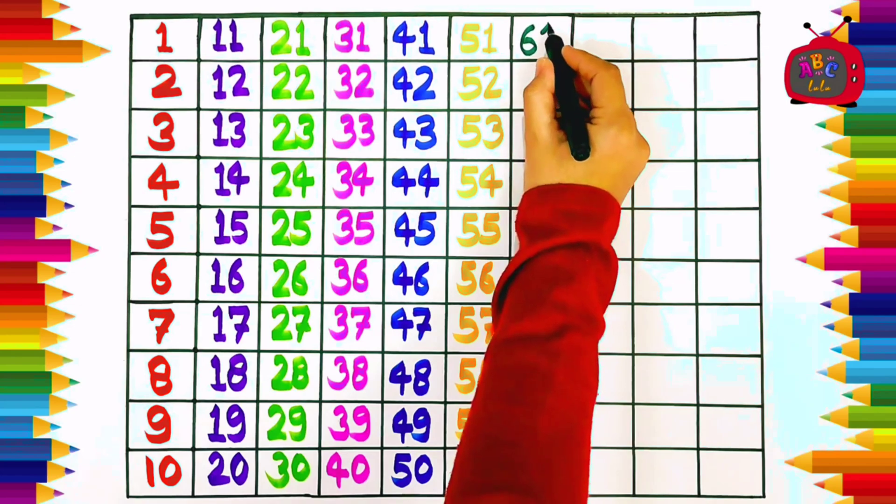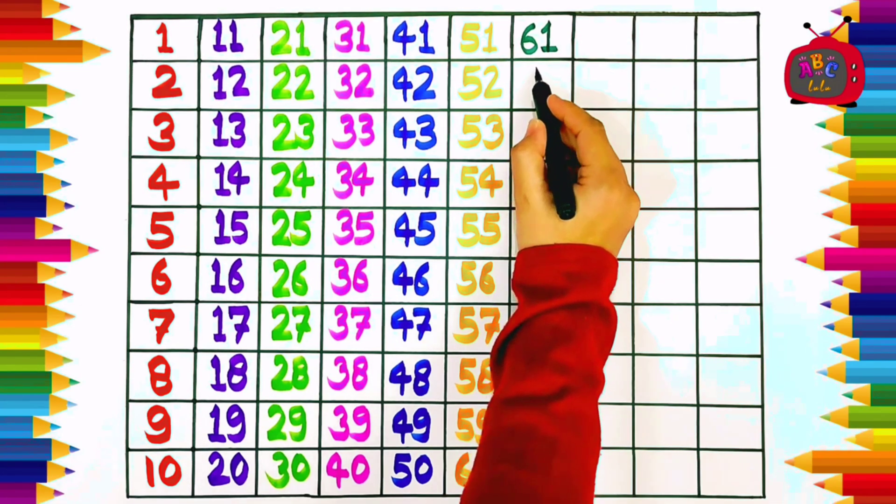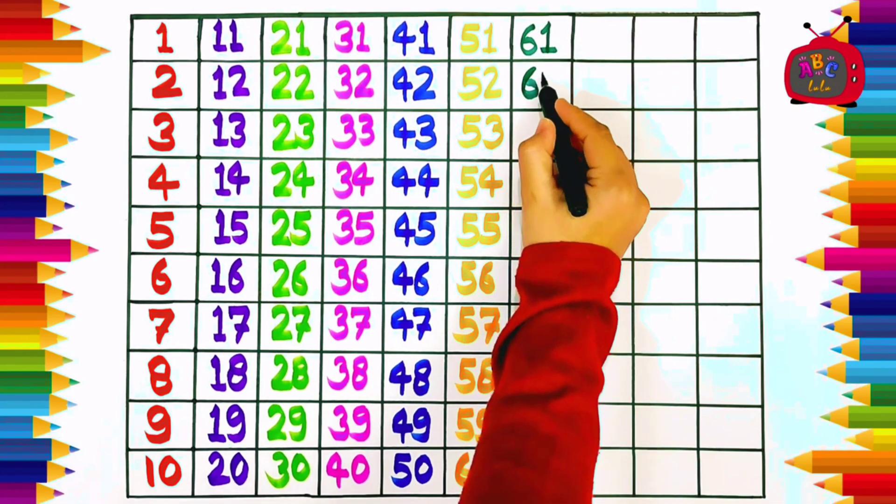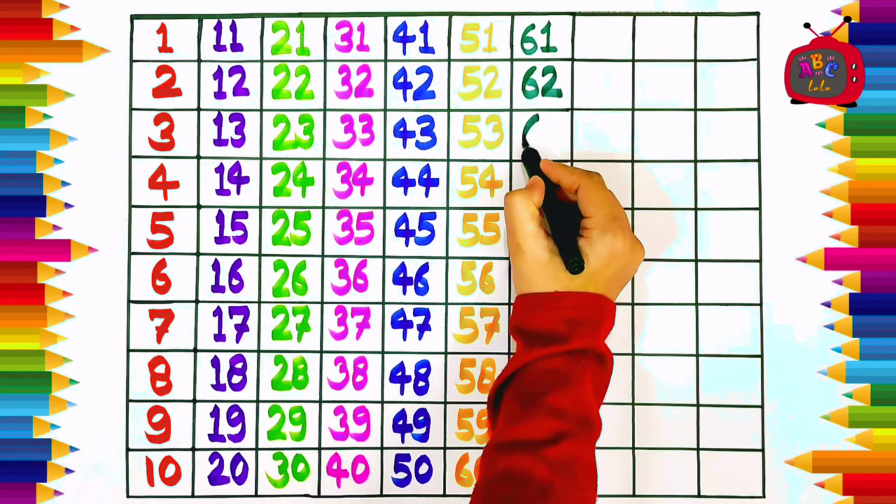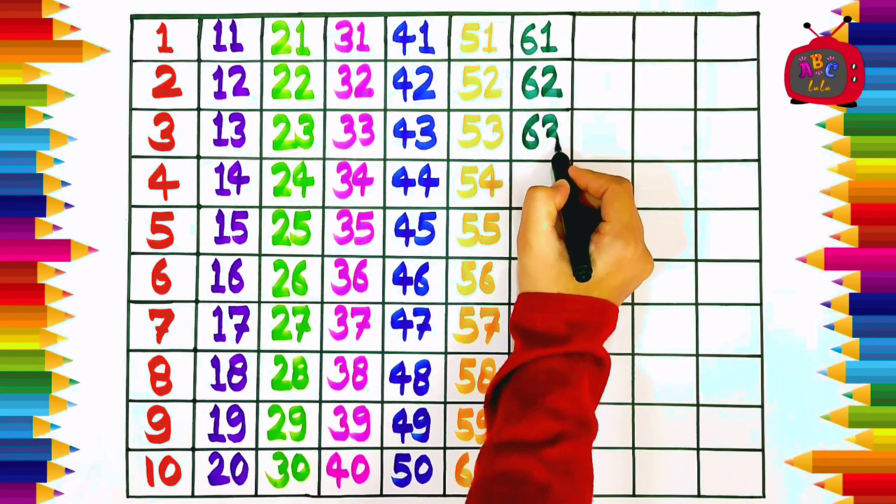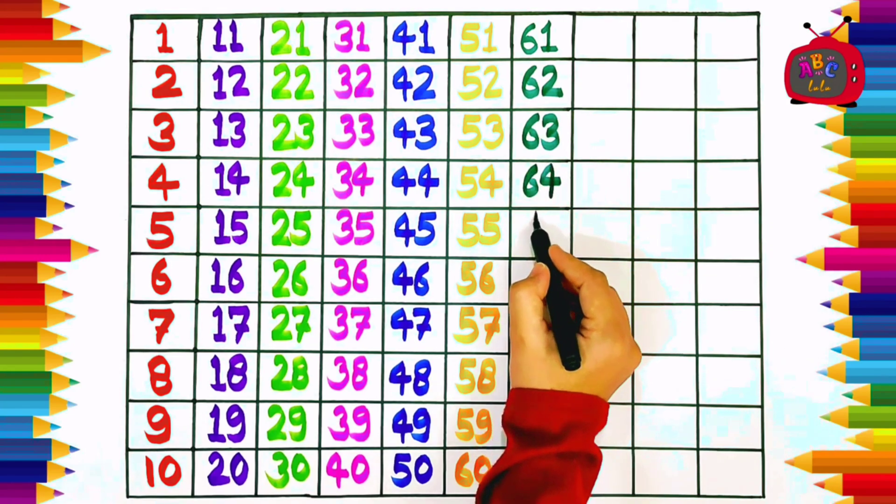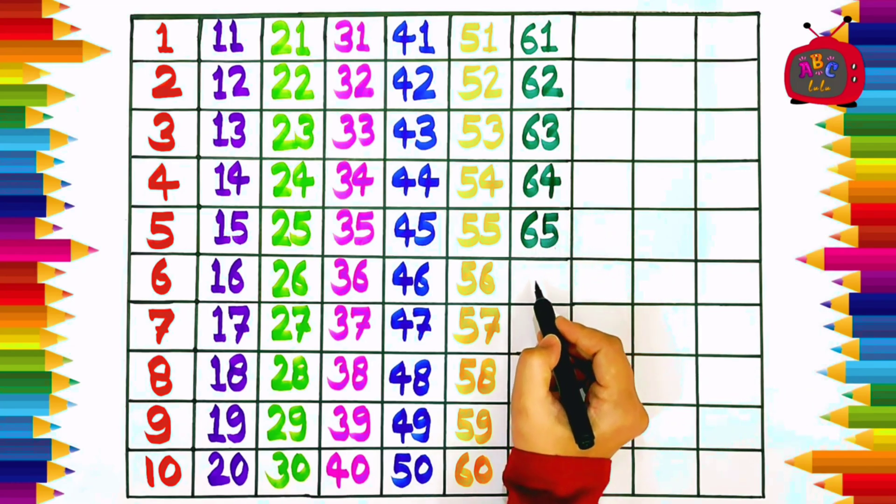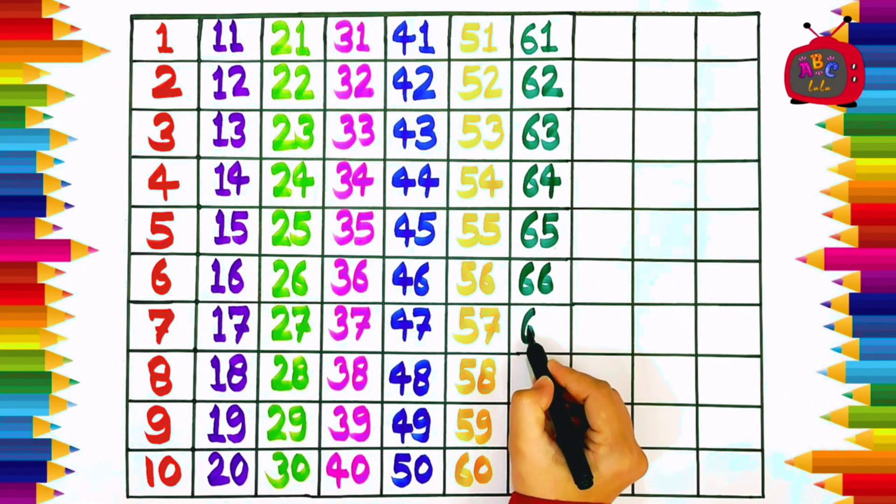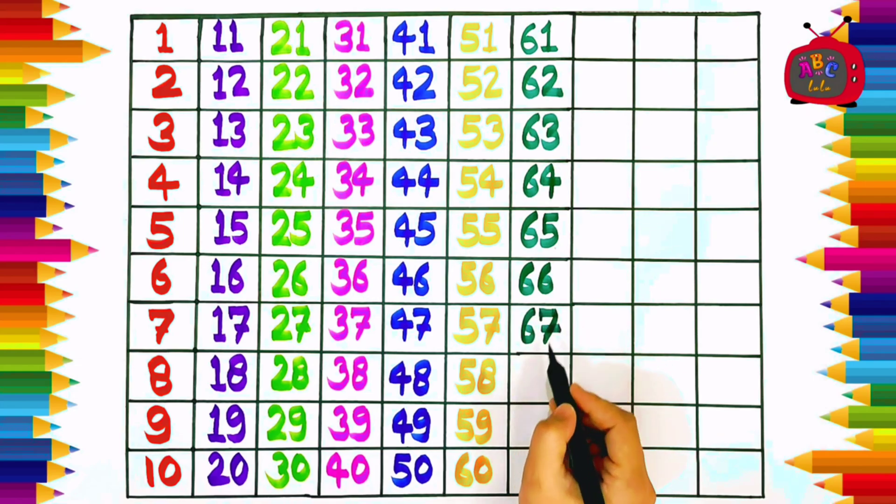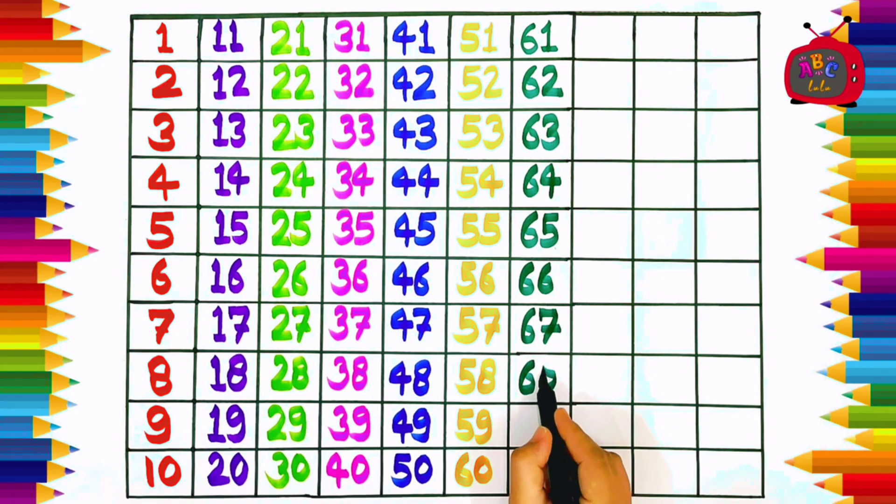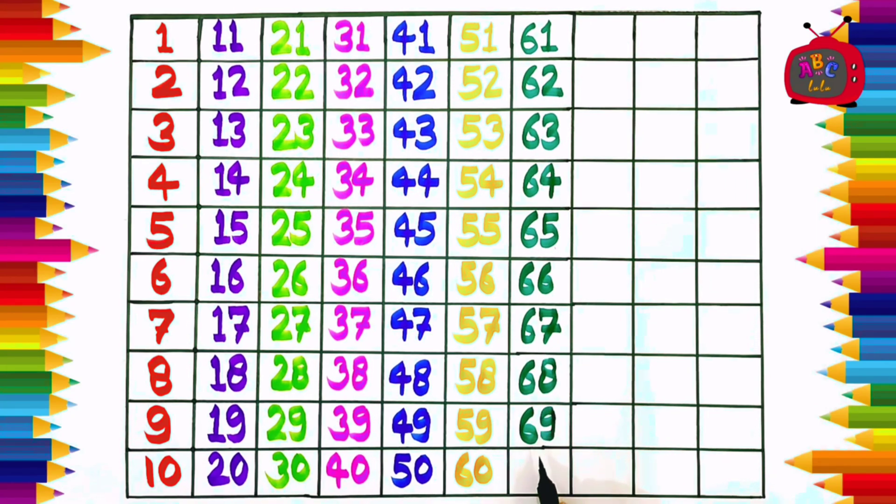Six one, sixty-one. Six two, sixty-two. Six three, sixty-three. Six four, sixty-four. Six five, sixty-five. Six six, sixty-six. Six seven, sixty-seven. Six eight, sixty-eight. Six nine, sixty-nine. Seven zero, seventy.